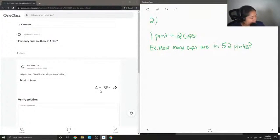Okay, so to answer this question, whatever value we're looking for will be on the top. So x cups over 52 pints, and then I'm going to put on the right side of the equal sign, my conversion factor in the same order.